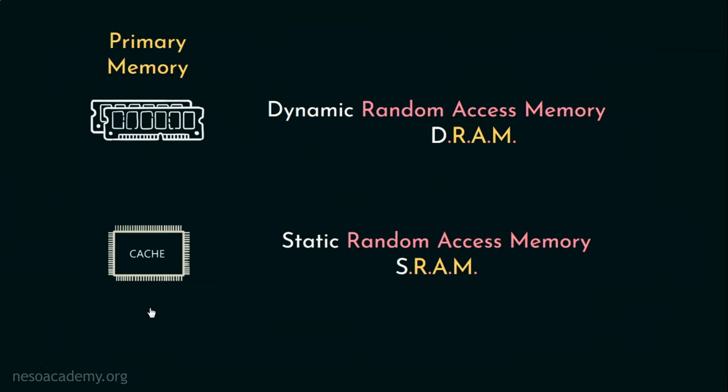Anyway, all these, be that cache or main memory are volatile. That means, they can only retain the data in them until the power is off. Therefore, to store the data more permanently, we opt for the next type of memory storage, the secondary memory.